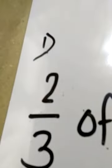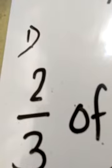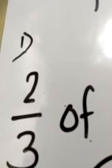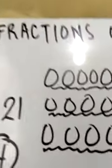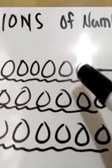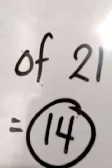Ang ating hahanapin is two-thirds, so we look for two-thirds. It means two portions of the three groups na pinaghati natin. We have to count the first and the second group. If you count this, seven plus seven, our answer is 14. So 14 is the answer for two-thirds of 21.